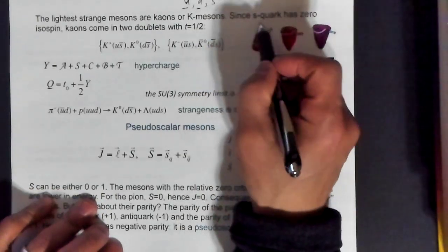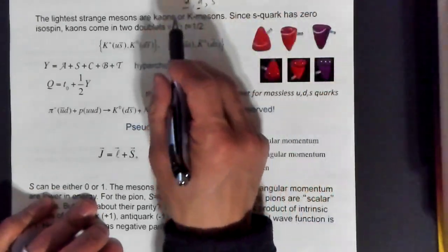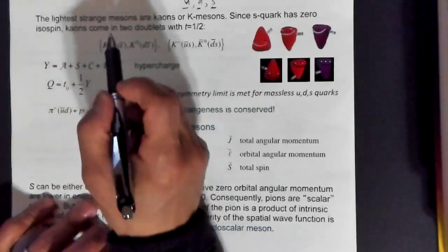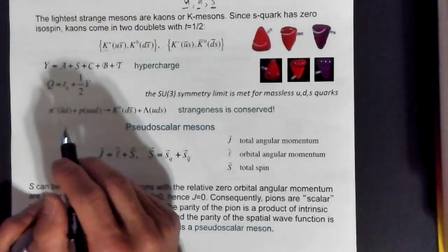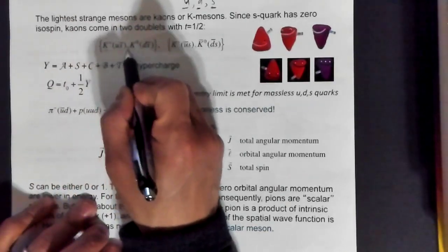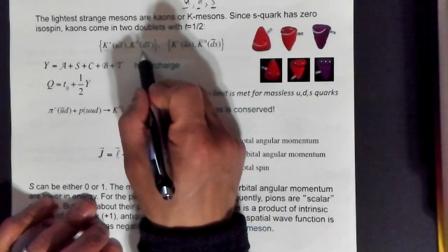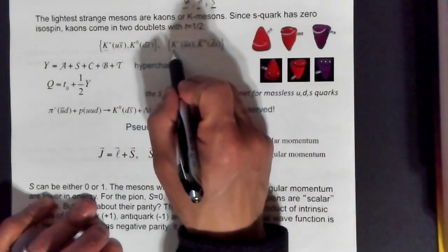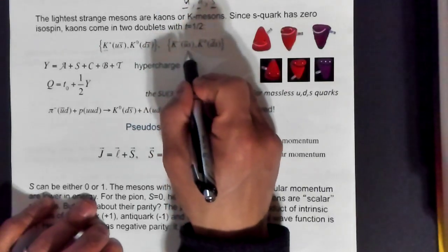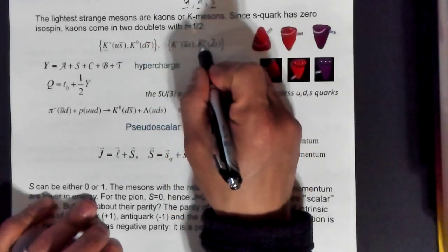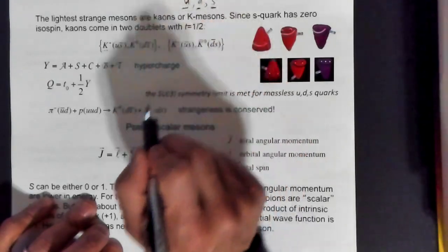Now we're talking about things that also involve the strange quark. We can have the K+ meson, which is U-Sbar, or K0, which is D-Sbar. You can also have a K-, which is Ubar-S, and a K0-bar, which is Dbar-S.